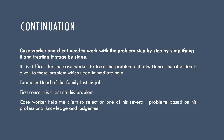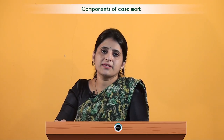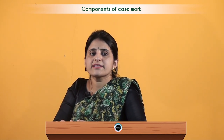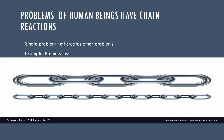The next characteristic of the problem: the case worker and client need to work with the problem step by step, simplifying it and treating it stage by stage. It is difficult to treat the problem entirely at once, so attention is given to those problems which need immediate help. For example, if the head of a family loses his job, there are many associated problems, but the first concern is the client, not just the problem. The case worker helps the client select one problem from several based on professional knowledge and judgment. The third characteristic is that problems of human beings have a chain reaction — a single problem creates another problem, as one problem leads to many others.